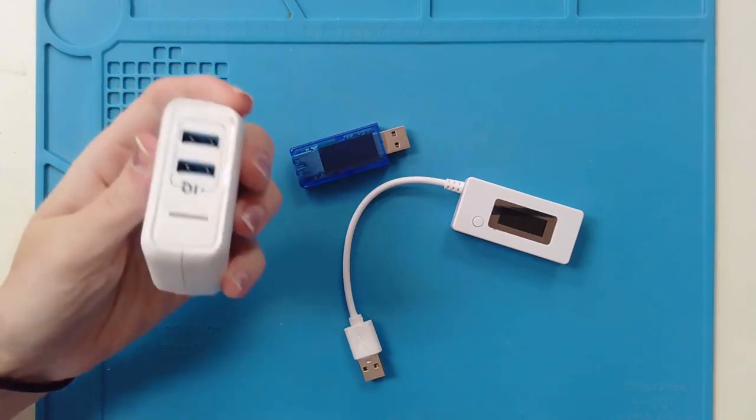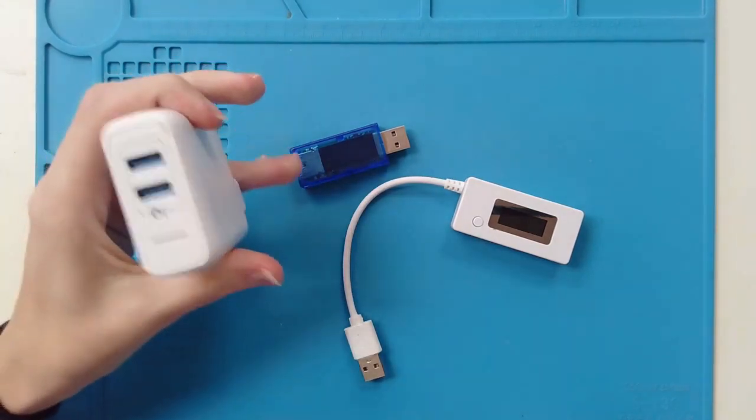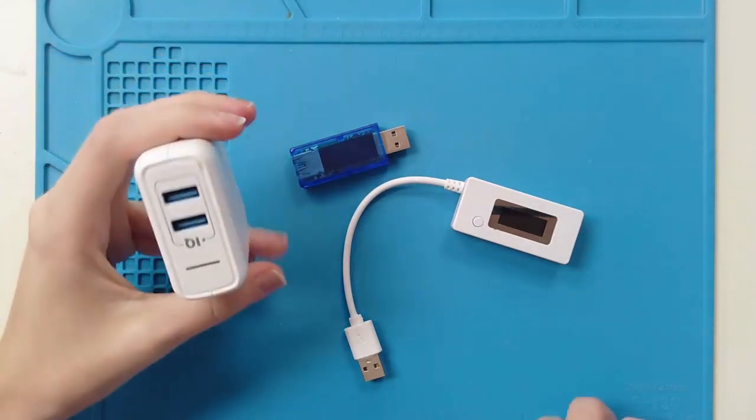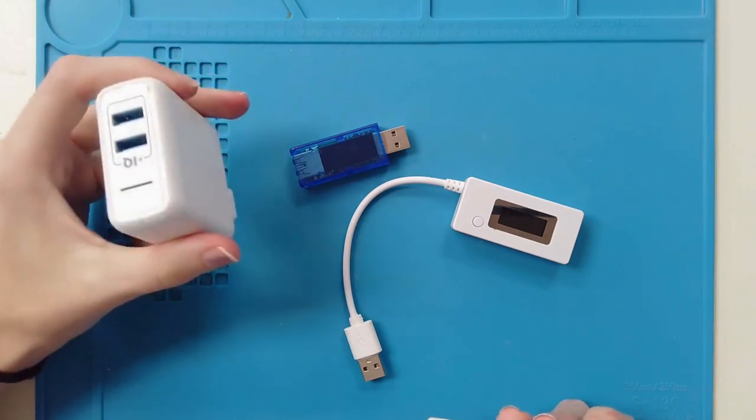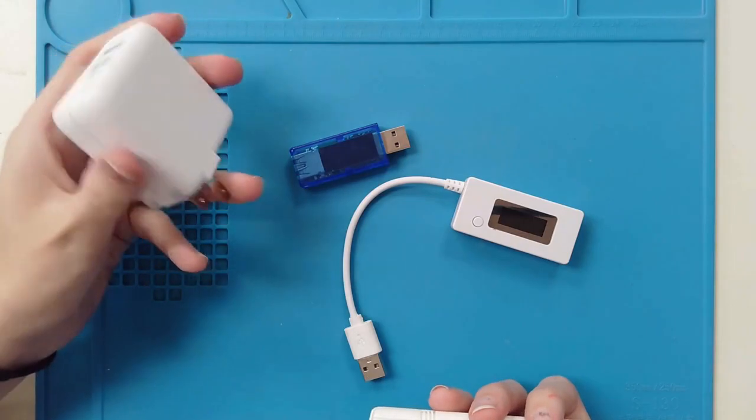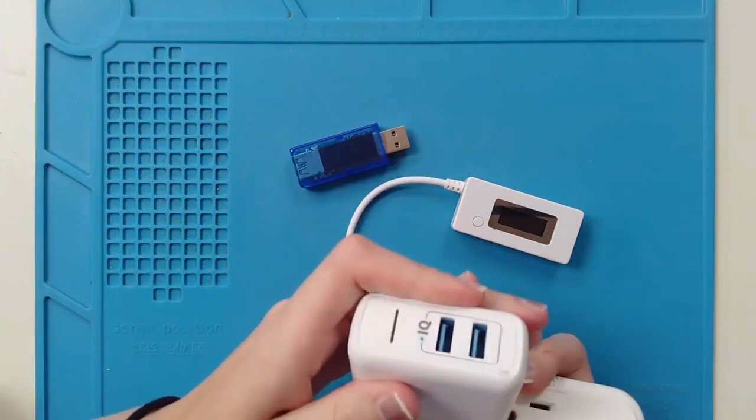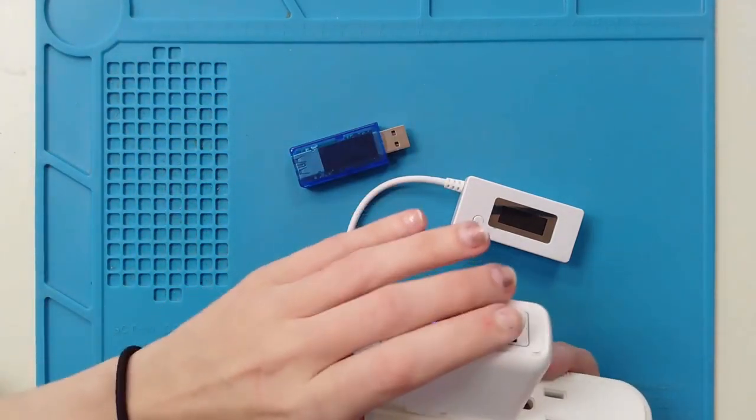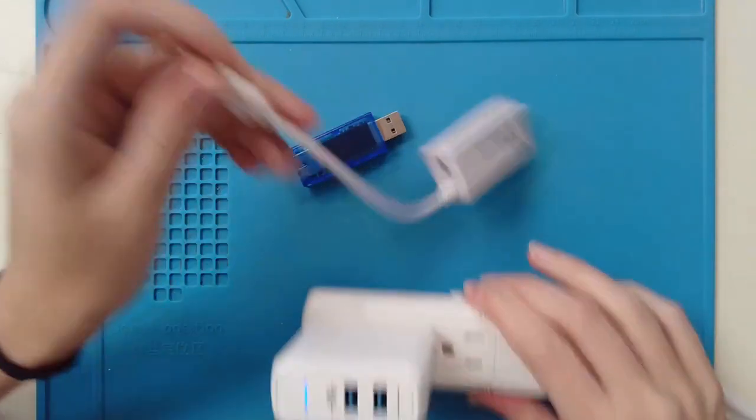For starters, you're going to want to be using a block that has the same capacity as you would get from a wall outlet, because we are plugging it into an extension cord. So this is going to provide us with the same voltage that you would get from a wall outlet. So we're going to plug that in right here.